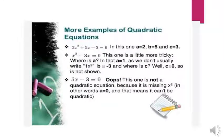Here are some examples of quadratic equations. Example 1: 2x² + 5x + 3 = 0. Here the constants are a = 2, b = 5, and c = 3.